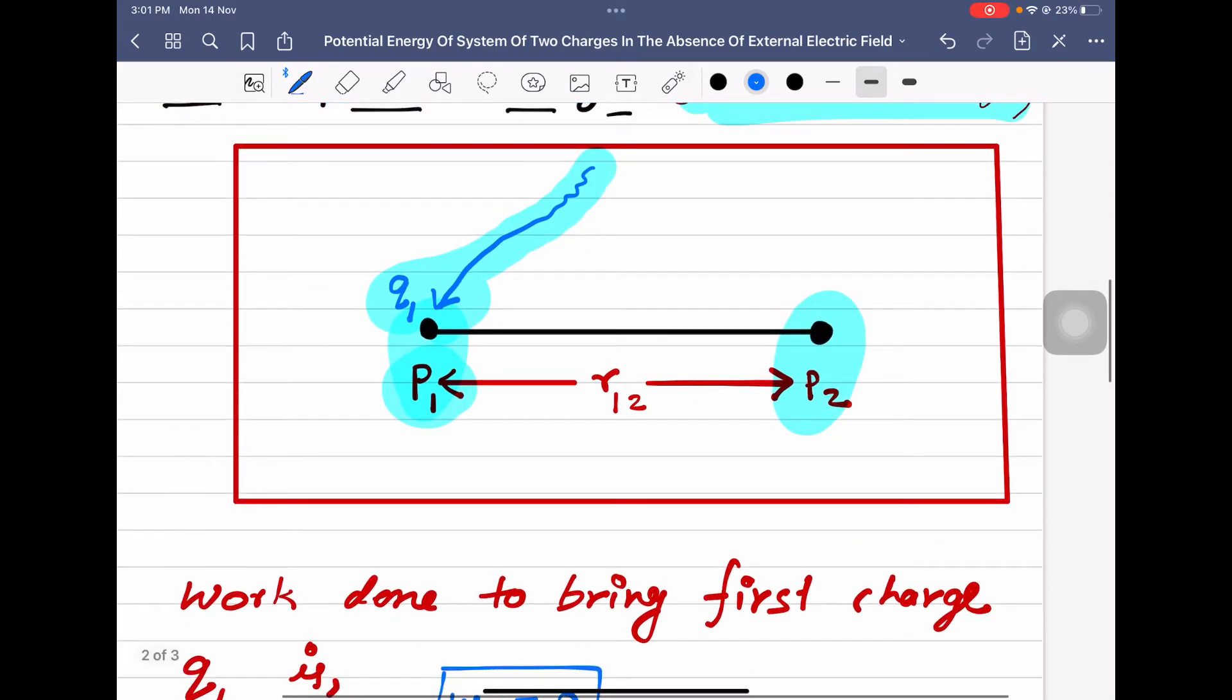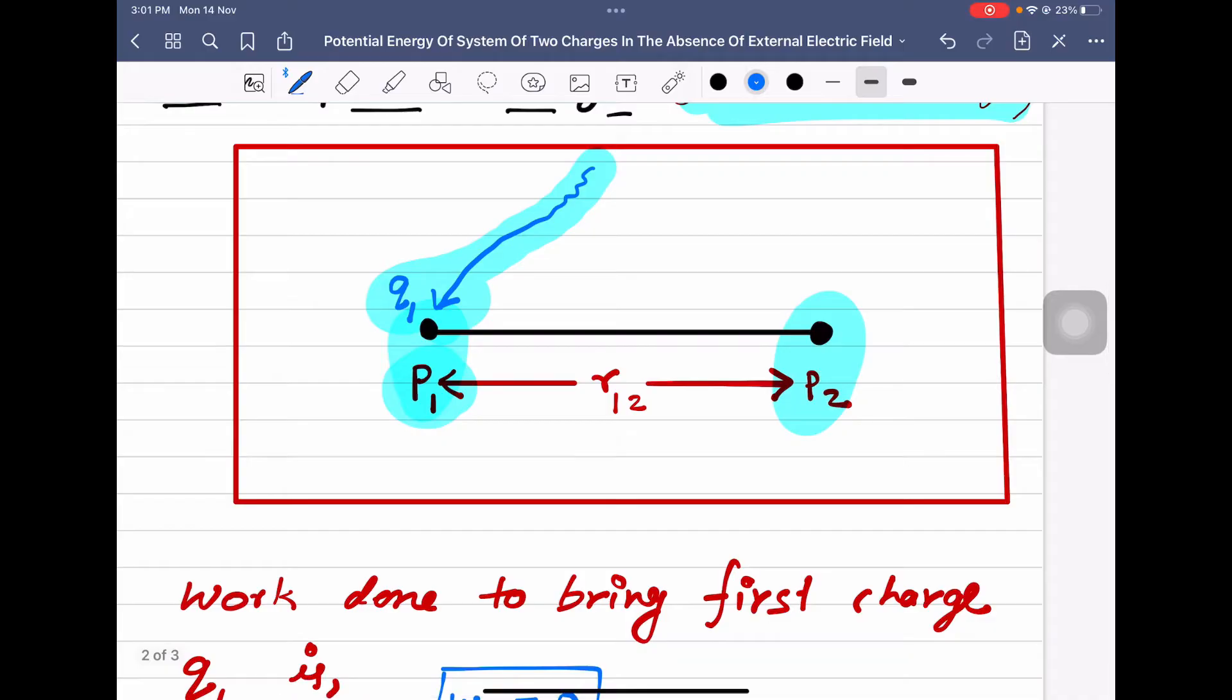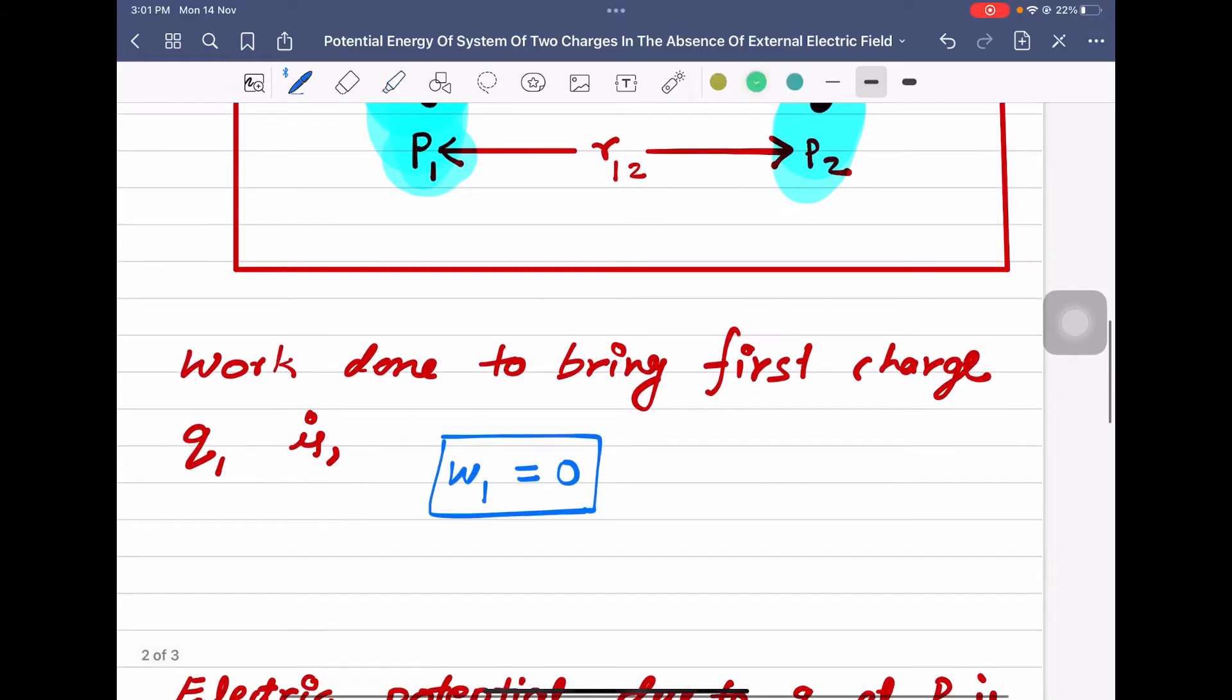Now what happens, now since Q1 is here at P1, this Q1 has got some electric field now, or due to this Q1, there is some potential at P2. What is that potential, we will see.